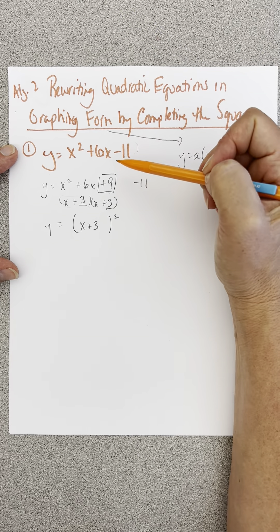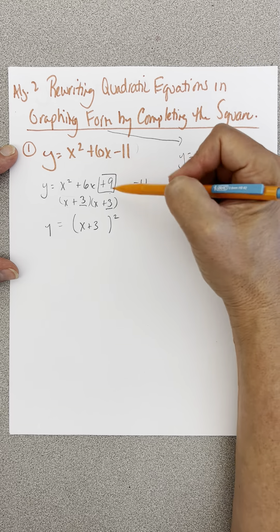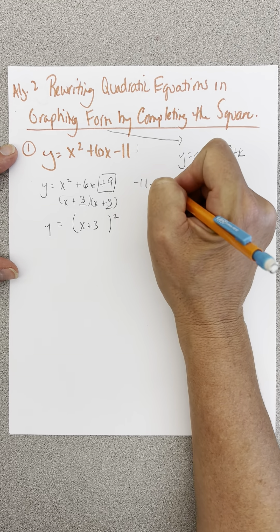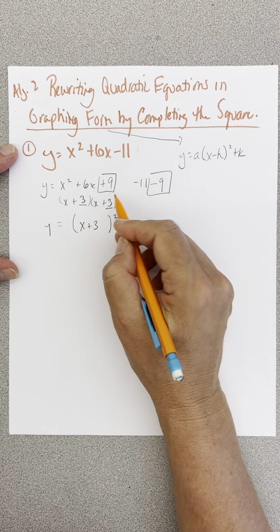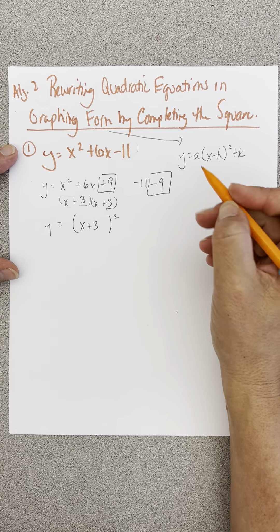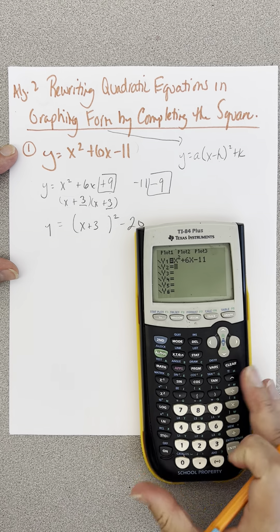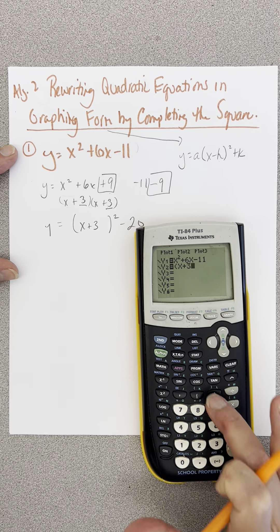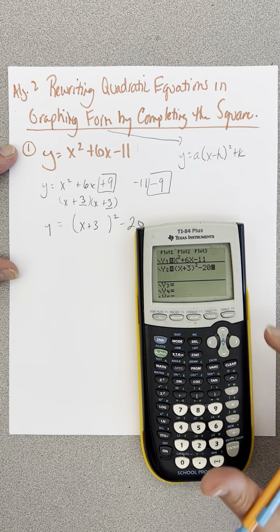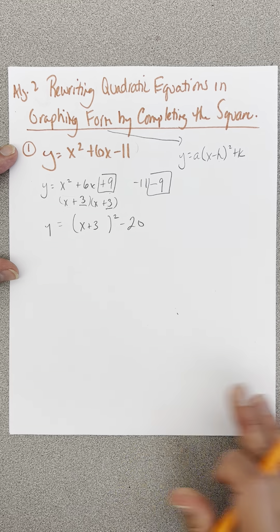There are two things I can do: I can add 9 to the other side, which I don't really want to do, or I can subtract 9 here, because those two things just make 0. So negative 11 minus 9 is minus 20, and that should be my new equation. I'm going to take x plus 3, square it, and subtract 20. The tables are exactly the same, so I know I have it.